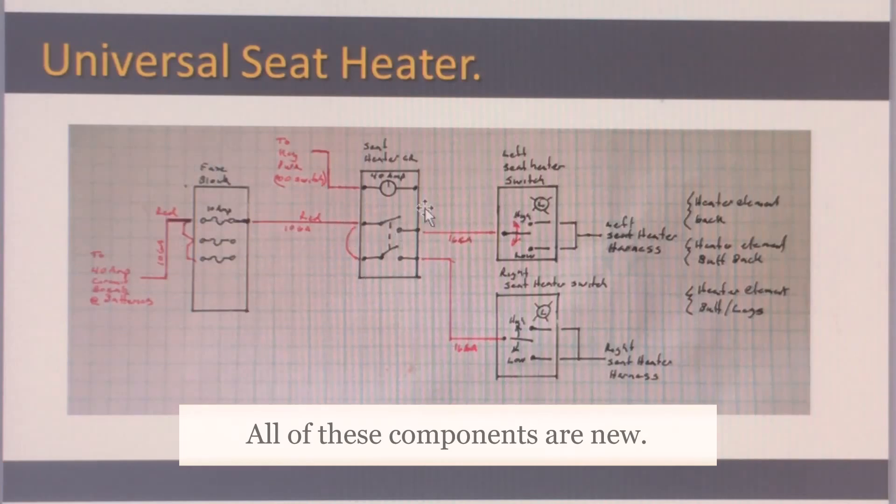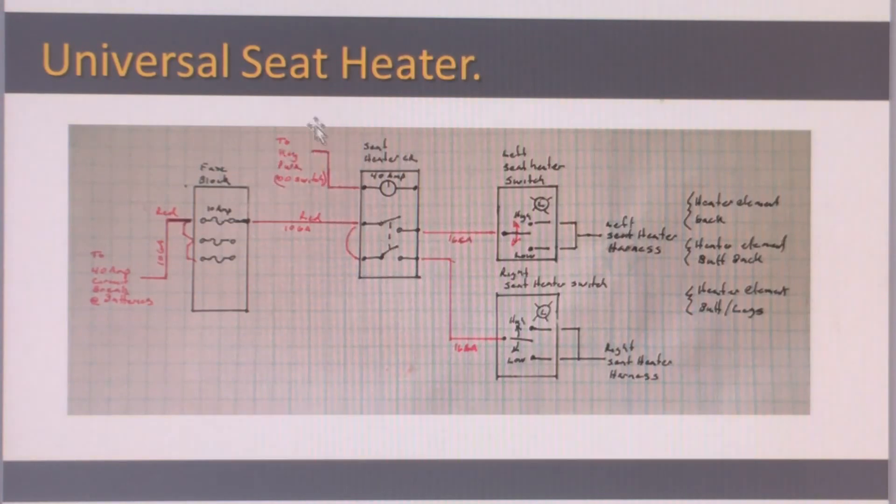From there, I use a circuit breaker. This is a 40 amp circuit breaker that is actuated by keyed power or energized by keyed power. So when the key is on, this is energized and allows the seats to come on, powers the two seat heaters. Of course, if the individual seat switches are off, the seats are still off, whether this is on or off.